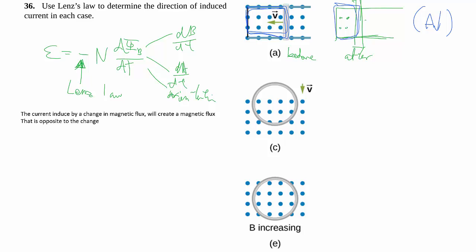So if the area decreases then what we have between here we are losing flux that is pointing out of the page because the field stays the same but the area decreased so the flux also decreased and this is outwards.